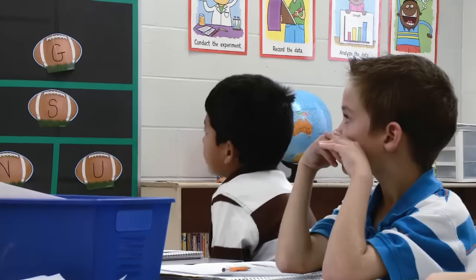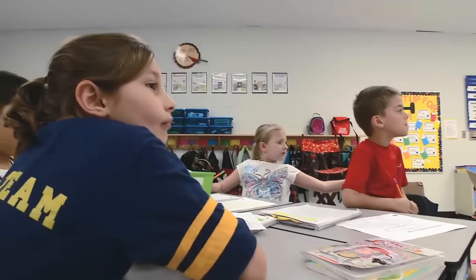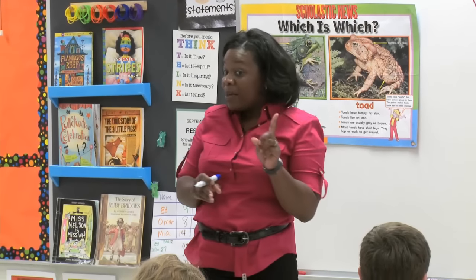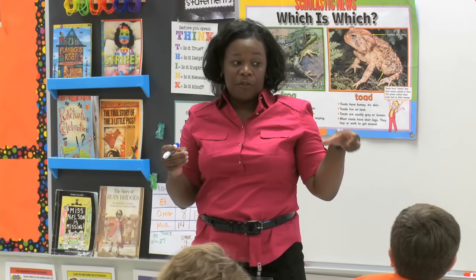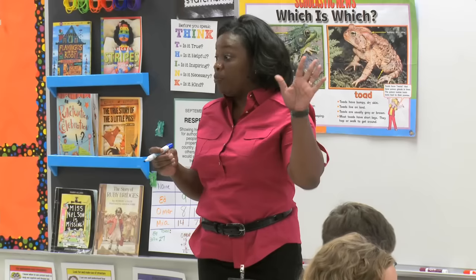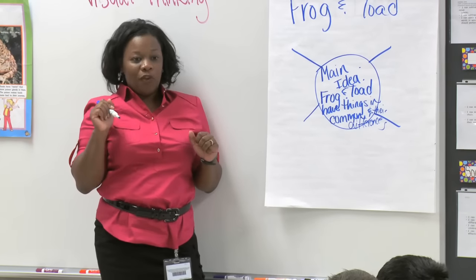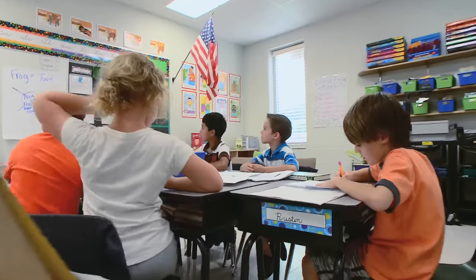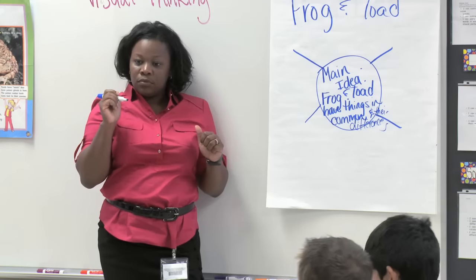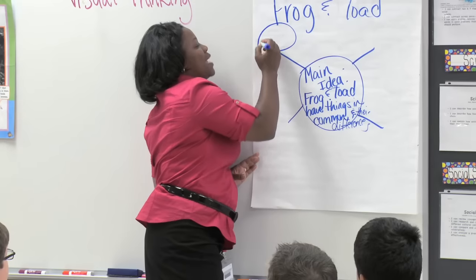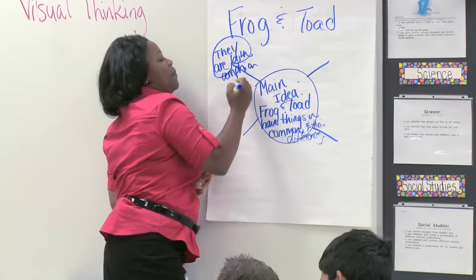You just finished your group discussion about things they have in common and things that are different. You looked in your paragraphs to find the supporting details. I'm going to go to each table and ask you to give me something they have in common or something different, and tell me where you found that detail — paragraph one, two, three, or four. Let's start with group four. Jared: They're from the same family — they are both amphibians. That was in the first paragraph.